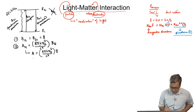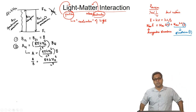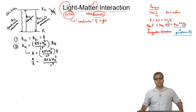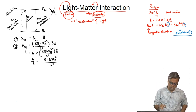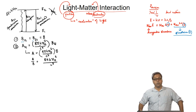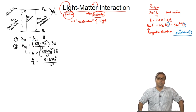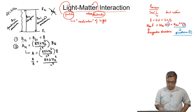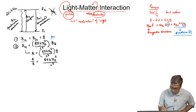The first relation states that for the given two states, the probability of absorption and the probability of stimulated emission are the same. Note that absorption and stimulated emission occur via the same mechanism — that is, both are light-induced phenomena. This is known as the principle of detailed balance.